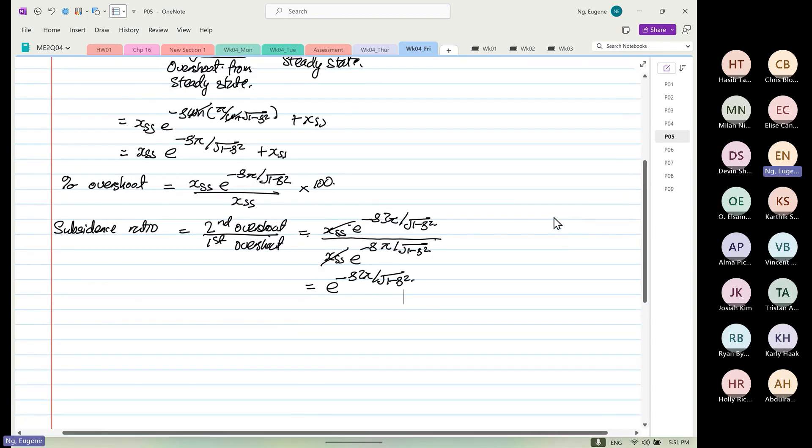So this is how you get your subsidence ratio. And then finally, we are going to calculate your 2% steady state. Now depending on your student number, it can be 2%, 3%, 4%, or 5%. Are we clear?